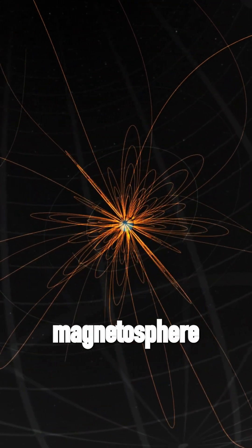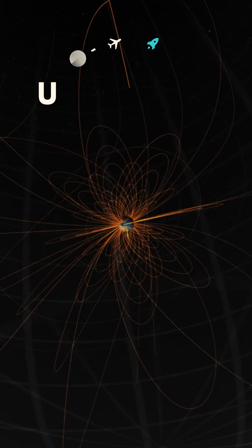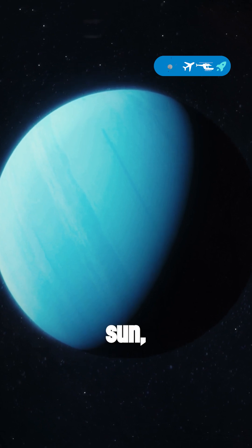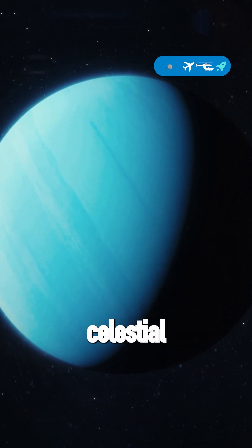How does Uranus' magnetosphere challenge our understanding of planetary science? Uranus, the seventh planet from the Sun, holds a magnetic secret that sets it apart from its celestial neighbors.